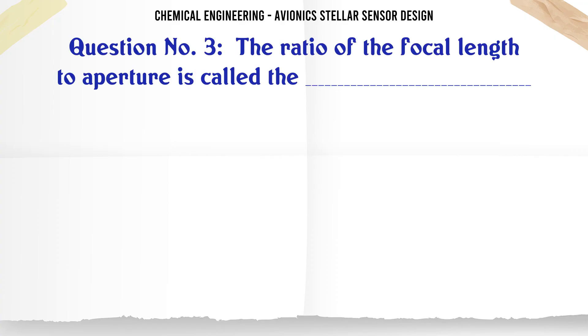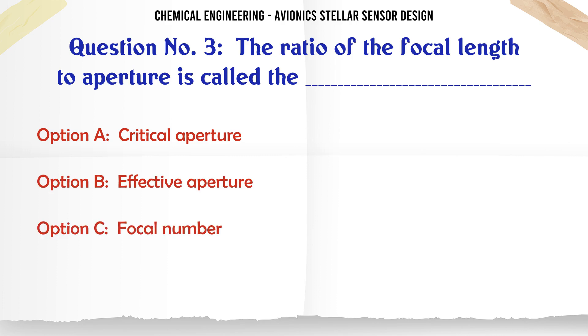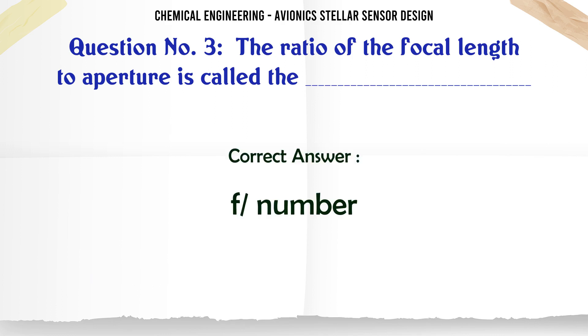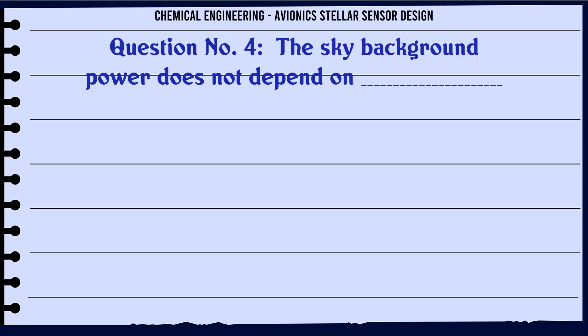The ratio of the focal length to aperture is called: A. Critical aperture, B. Effective aperture, C. Focal number, D. F number. The correct answer is F number.